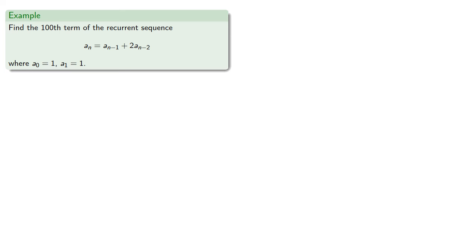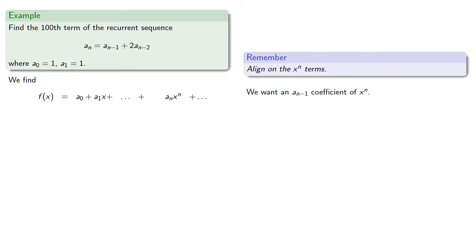So remember when finding the generating function, it helps to align on the x to the n terms. So we assume f of x has a power series expansion. We want an a_{n-1} coefficient of x to the n. In our power series, we have a_{n-1}x to power n-1, so we'll take x times f of x.